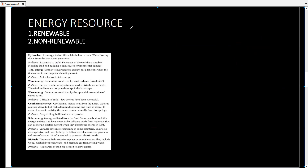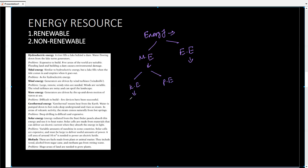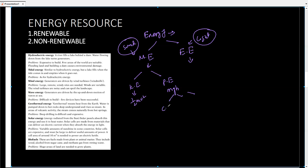Let's review everything. Energy is defined as the ability to do work. Energy is divided into mechanical energy and electromagnetic energy — mechanical energy is medium dependent, electromagnetic energy is medium independent. Mechanical energy is further divided into kinetic energy and potential energy. Kinetic energy is the energy possessed by a body due to its motion; potential energy is the energy possessed by a body due to its position or height from the earth's surface. The formula for kinetic energy is ½mv² and for potential energy it is mgh. Potential energy is further divided into three types: chemical potential energy, elastic potential energy, and gravitational potential energy.